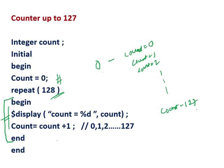It comes out from this repeat block, and the count will be again 0. So it will count 0 to 127. Whatever is written inside the repeat loop, those statements are executed the number of times specified inside the repeat parenthesis. Here it is 128, so for 128 times the display shows the count value: count equal to 0, count equal to 1, count equal to 2, and the last is count equal to 127.